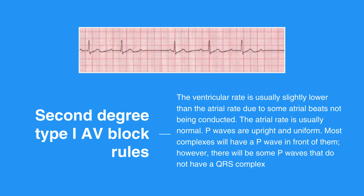The ventricular rate is usually slightly lower than the atrial rate due to some atrial beats not being conducted. The atrial rate is usually normal. P waves are upright and uniform. Most complexes will have a P wave in front of them; however, there will be some P waves that do not have a QRS complex. The PR interval gets progressively longer until there is a dropped QRS complex. The QRS complex measures less than 0.12 seconds.